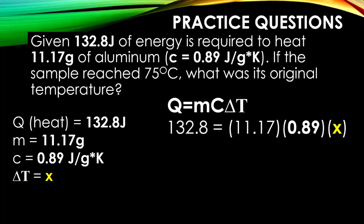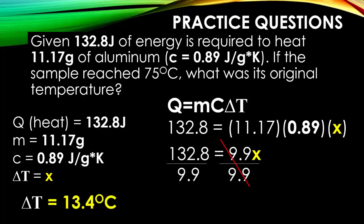We're plugging into the formula all the values that are given to us with the exception of ΔT. As we simplify the right-hand side of the equation, we get 132.8 equals 9.9x. We divide both sides by 9.9, and this tells us that our change in temperature is 13.4 degrees Celsius. This is the change in temperature. We know from previously the change in temperature equals your final temperature minus your starting temperature. Our final temperature is 75 degrees Celsius. Therefore, if we take 75 degrees Celsius and we subtract it from a value, which we're going to call our starting temperature, the change should be 13.4 degrees Celsius.